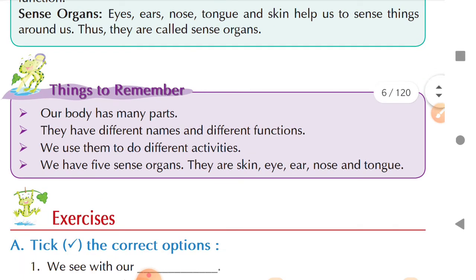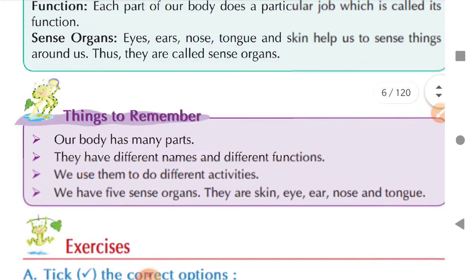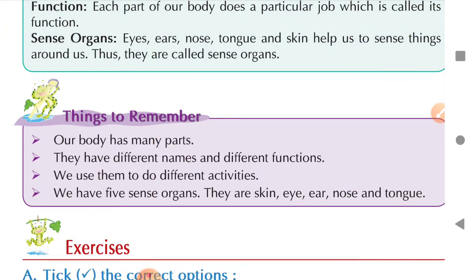Now, things to remember: our body has many parts, they have different names and different functions, and we use them to do different activities. We have five sense organs — they are skin, eyes, ears, nose, and tongue. So now we will start the exercises, children.